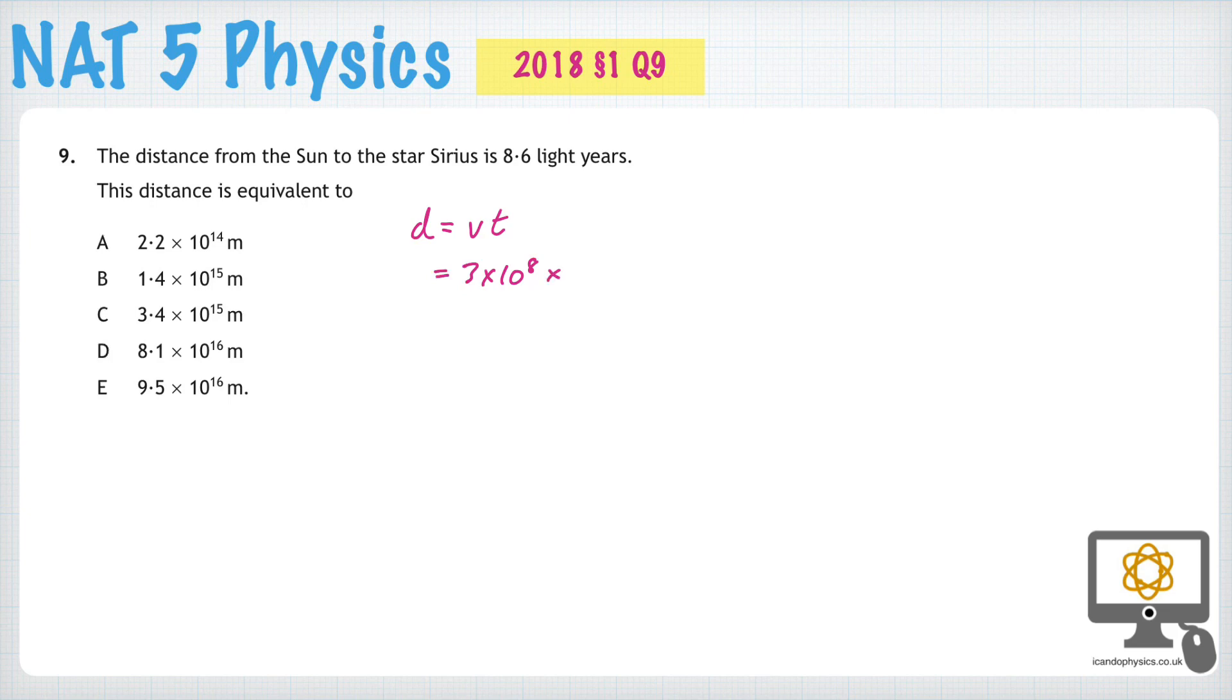One year is 365 days, which in each day is 24 hours, in each hour is 60 minutes, in each minute is 60 seconds. So that will determine for us the distance that light travels in one year.